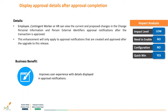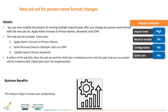The next feature is a new job set for person name format changes. Previously, multiple processes or jobs had to be run for person name format changes. Now we have a single job set called 'Apply Name Formats to Person Names Keywords and LDAP.' This combines all needed jobs - including Apply Name Formats to Persons, Send Personal Data for Multiple Users to LDAP, and Update Search Keyword Person. The job set runs even if one of the individual jobs fails, making it independent based on need. This increases productivity and provides seamless performance for users.